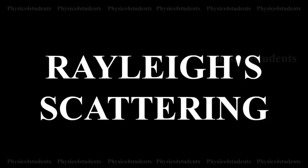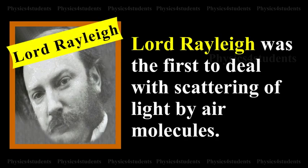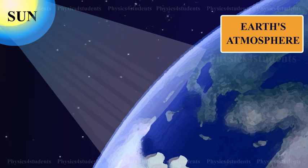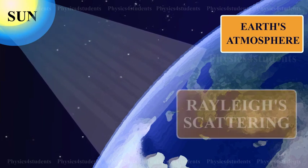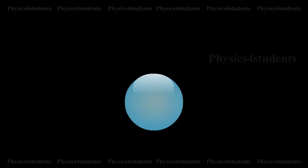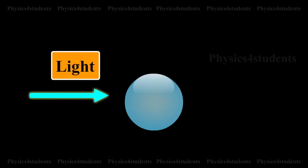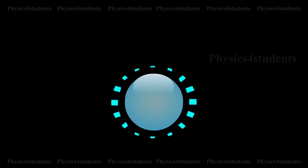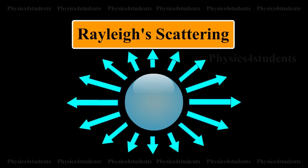Rayleigh Scattering of Light. Lord Rayleigh was the first to deal with scattering of light by air molecules. The scattering of light by the molecules of the gas in the Earth's atmosphere is called Rayleigh Scattering. The basic process in scattering is absorption of light by the molecules followed by its re-radiation in different directions.